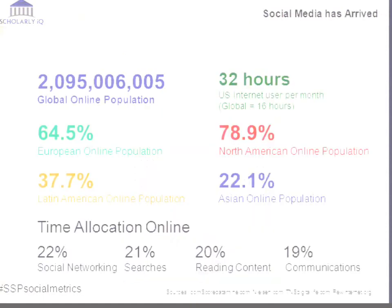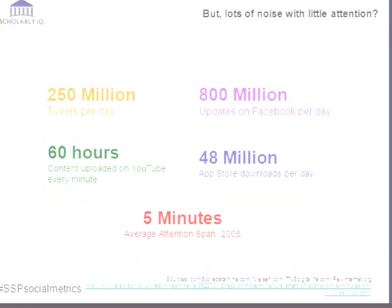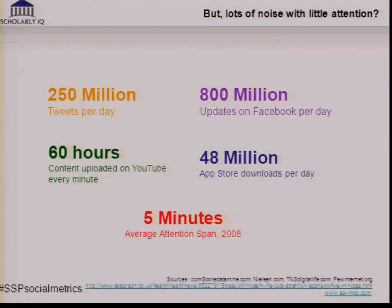We generally know social media has arrived. We're all spending a lot of time tweeting and using broadband. But putting it in context is different because as publishers, how do we get our way through that? If there are 250 million tweets a day, 800 million updates on Facebook, 60 hours of content loaded on YouTube every minute — how do you as a publisher use that channel to make it relevant to you? That's a difficult piece.